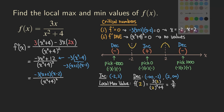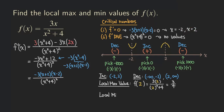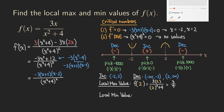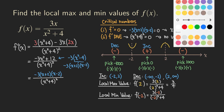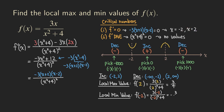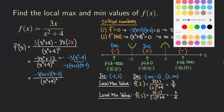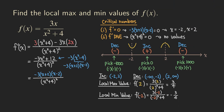The local minimum value at x equals negative two: plugging negative two into the original function gives negative three over four. So the local minimum value is negative three over four. If we want the points, the local maximum point is (2, 3/4) and the local minimum point is (negative 2, negative 3/4).